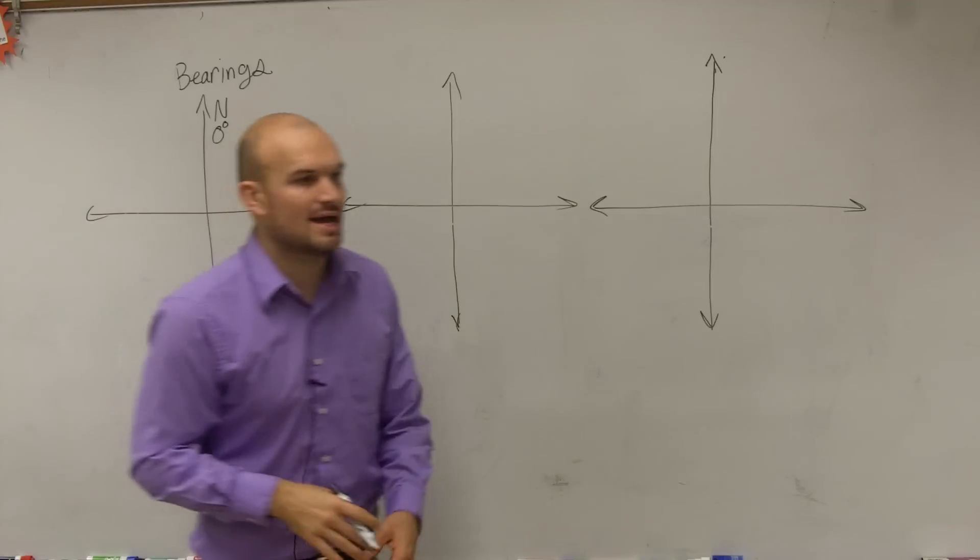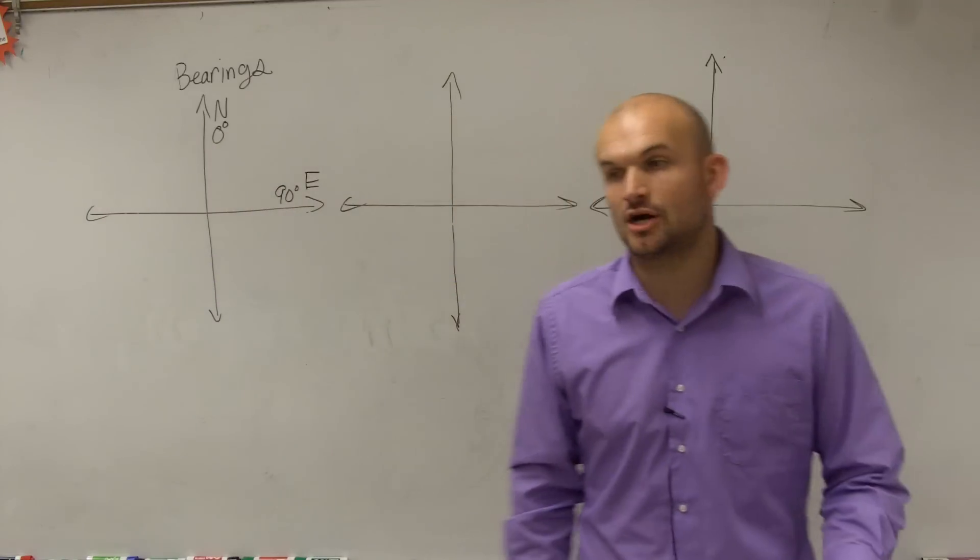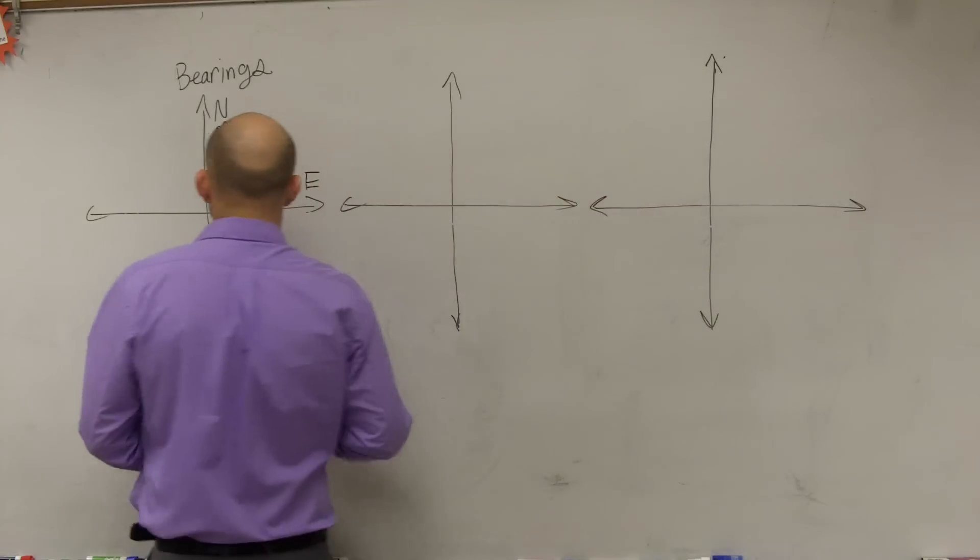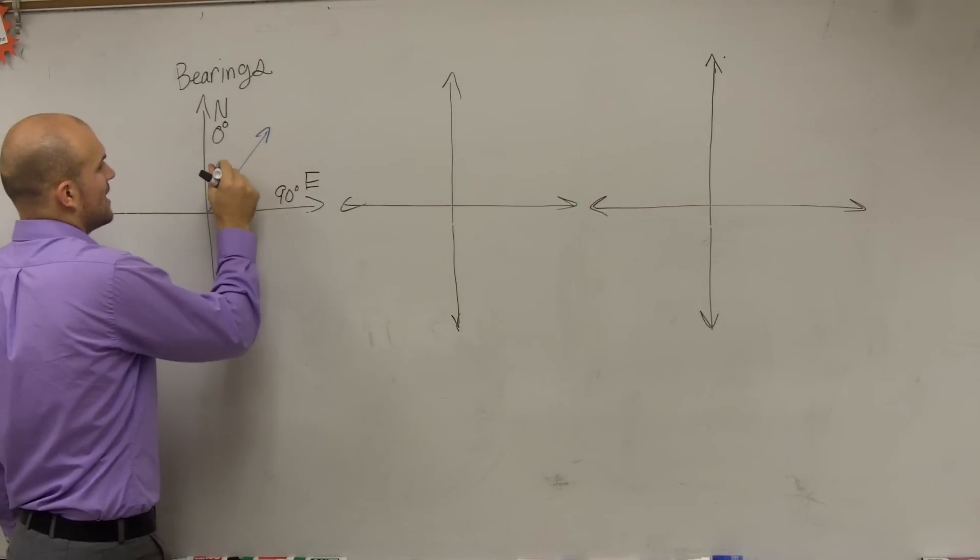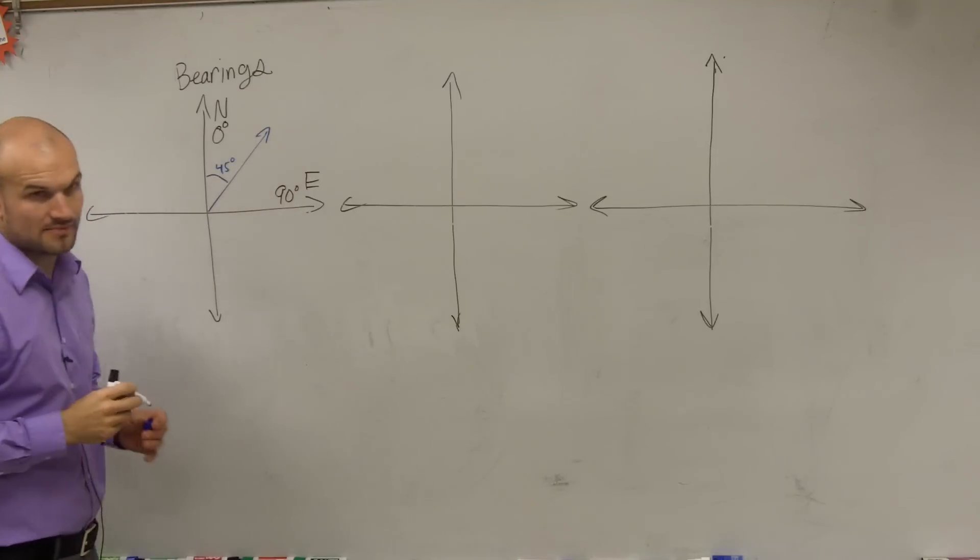So if I say I'm going at a direction of a bearing of 45 degrees, you guys could say that my angle would be like this, where that angle is 45 degrees.